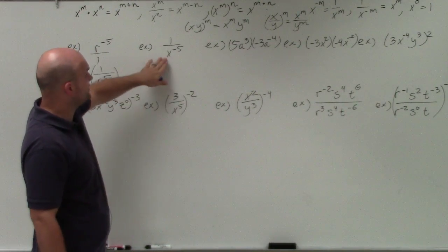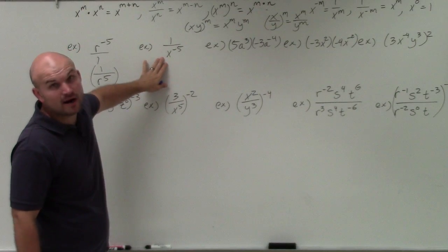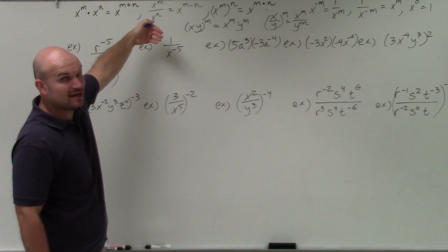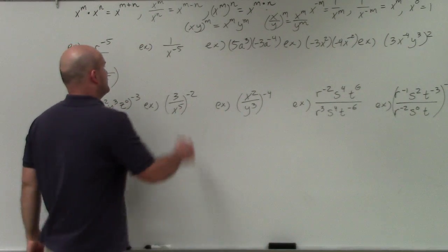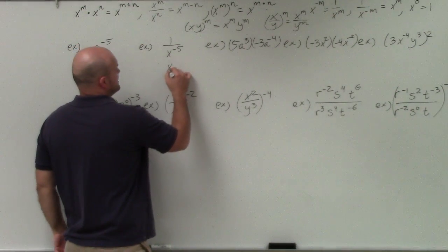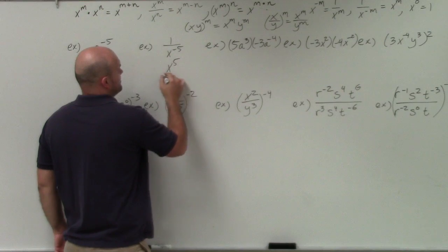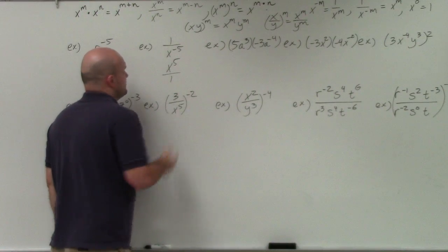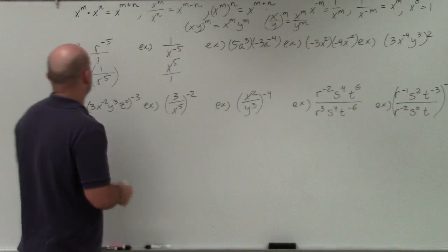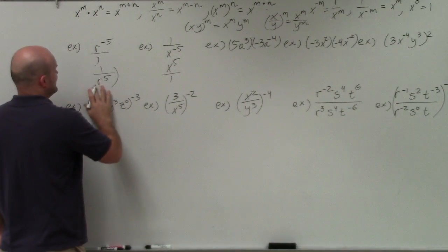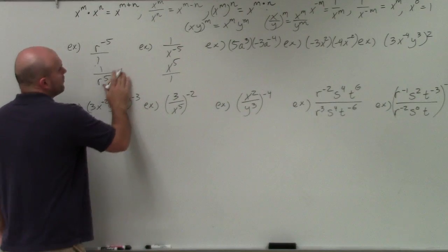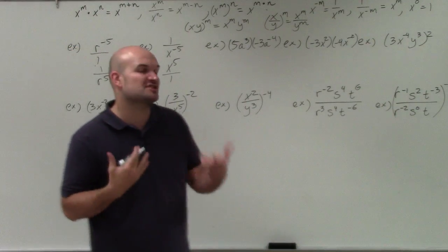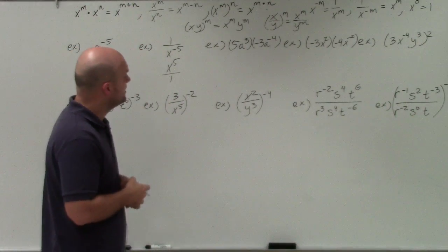Over here now, if I have a negative power in the denominator, by rewriting it as a reciprocal, I can rewrite this as x to the positive fifth over 1. We don't really need to write the 'over 1,' but a lot of times that helps students visualize it from the beginning.